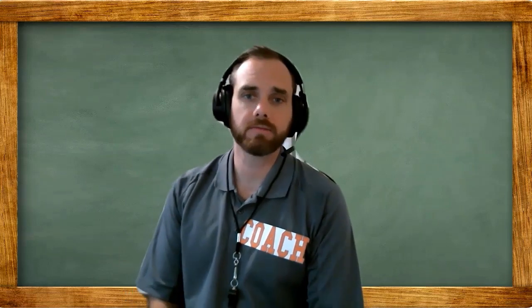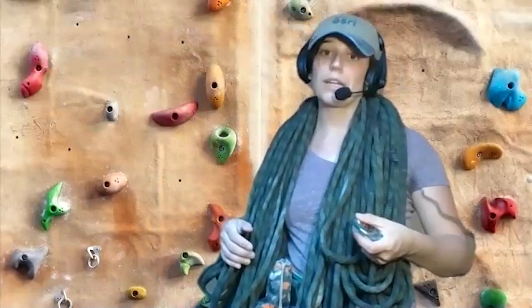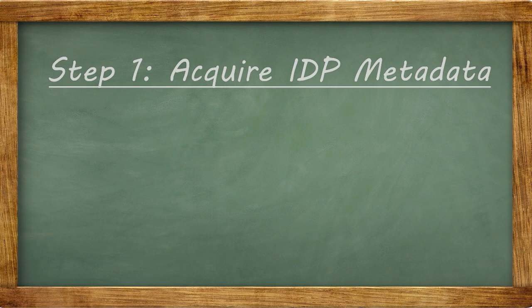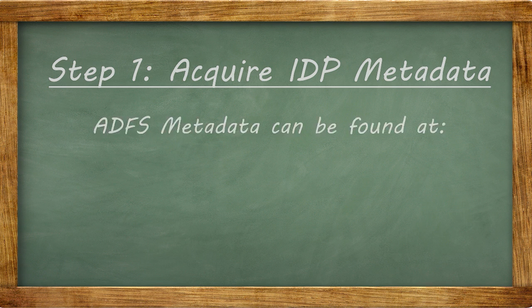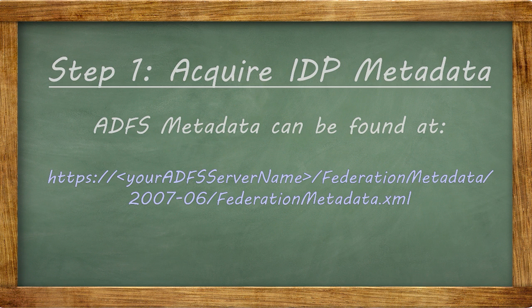The first thing you'll need is your IDP metadata. How you access the metadata will vary from IDP to IDP, but for ADFS you can find it at: https://[your-adfs-server-name]/FederationMetadata/2007-06/FederationMetadata.xml. In your browser, you can either use this URL directly in ArcGIS Online or download the XML file and upload it to ArcGIS Online.